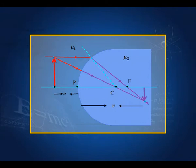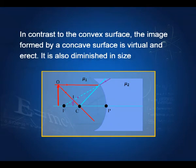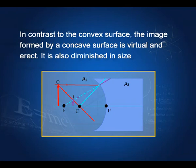The procedure for ray tracing remains the same. We have an object; a ray parallel to the axis must go through the focus after refraction. A ray connecting the tip of the object with center of curvature C goes undeviated because it is normal to the surface. Wherever these two rays meet or appear to meet is where the image is formed. For a concave surface, the parallel ray appears to come from the focus, the ray through C is undeviated, and they intersect at I — the image of O. This image is virtual, erect, and smaller in size.